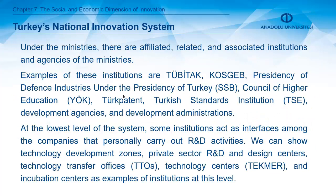After the ministries, the second level consists of affiliated, related, and associated institutions and agencies of the ministries. Examples include TÜBİTAK, KOSGEB, Presidency of Defense Industries, Council of Higher Education, Türk Patent, Turkish Standards Institution, Development Agencies, and Development Administrations. At the lowest level of the system, institutions act as interfaces among companies that carry out research and development activities, including technology development zones, private sector R&D and design centers, technology transfer offices, technology centers, and incubation centers.